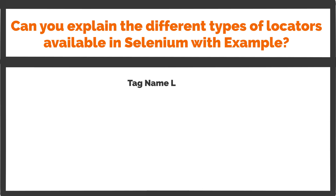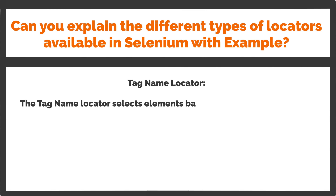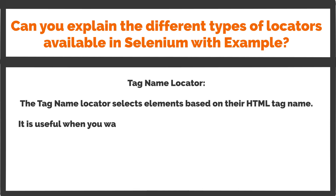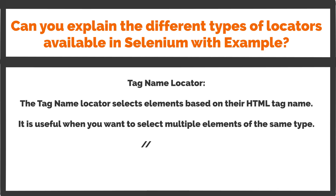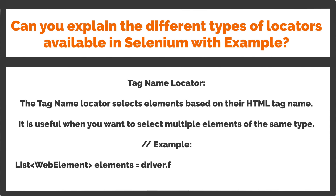Tag name locator: The tag name locator selects elements based on their HTML tag name. It is useful when you want to select multiple elements of the same type. // Example: List<WebElement> elements = driver.findElements(By.tagName("input"));